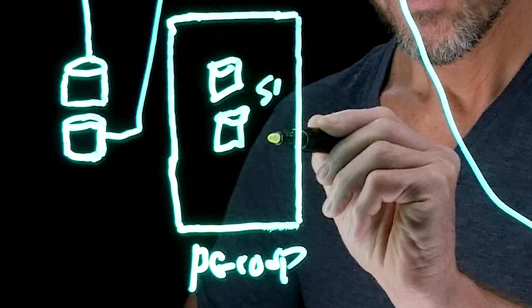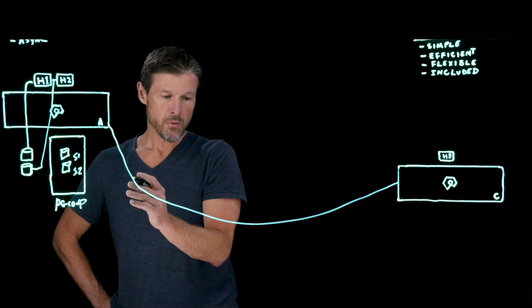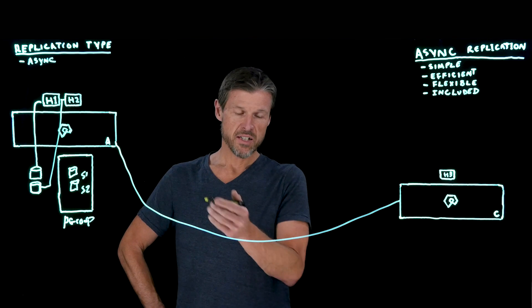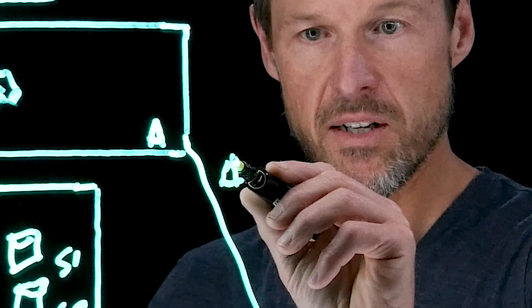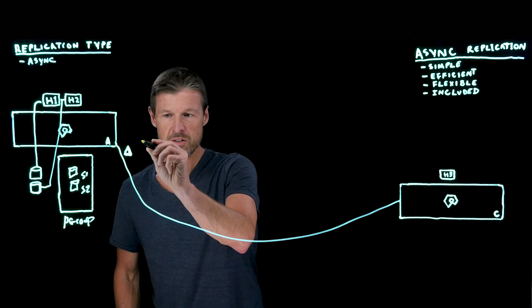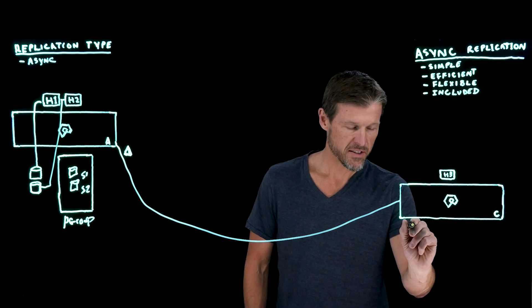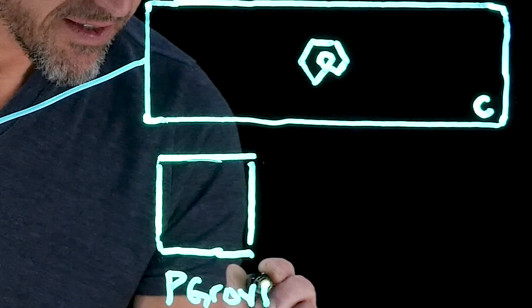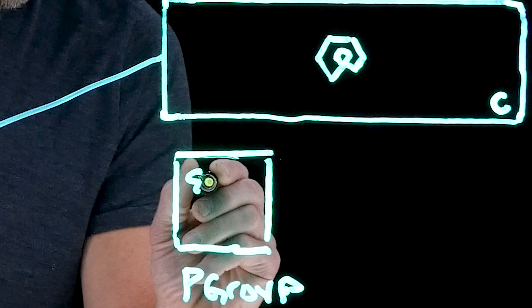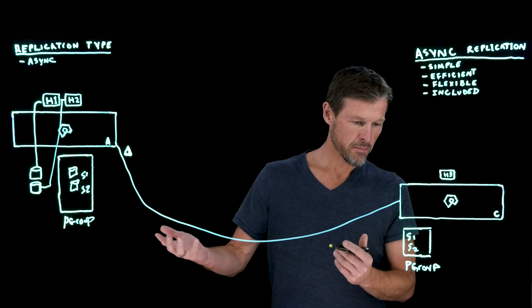I'm going to draw S1 and S2 to represent the snapshots of those volumes. Asynchronous replication is extremely efficient — it uses snapshot differencing so we're only sending the unique changes, just the delta between these two arrays. The deltas are sent across to the same p-group over on array C, which is replicated with the snapshots that correspond with the volumes on array A.